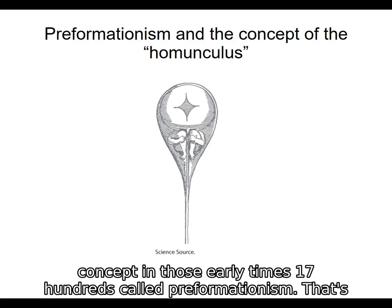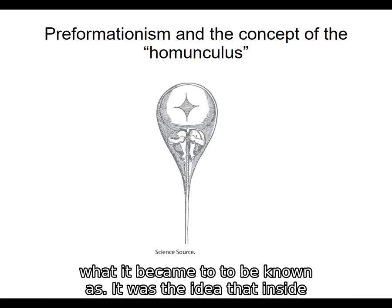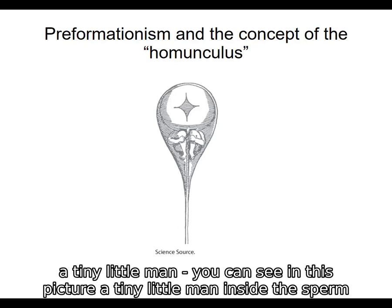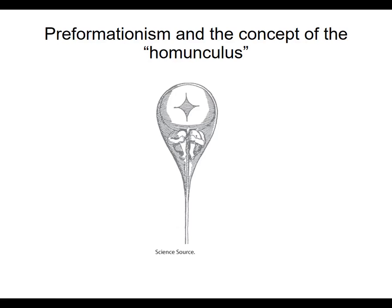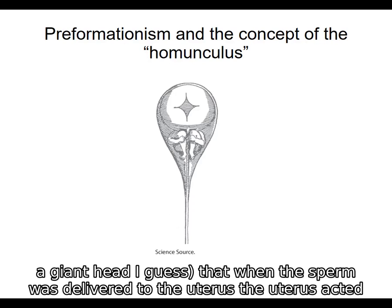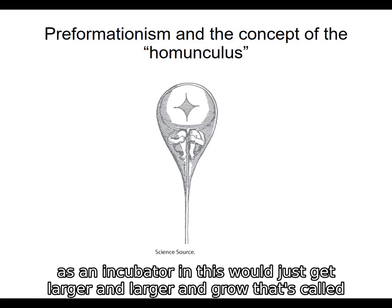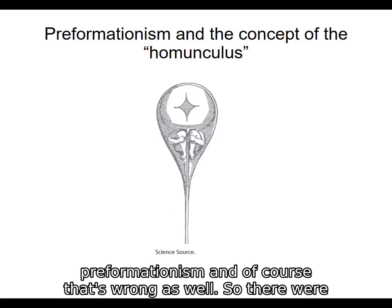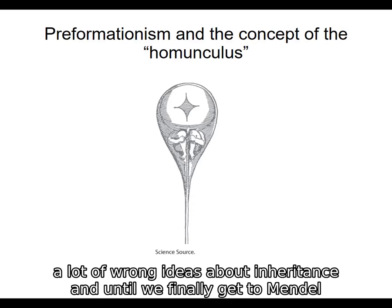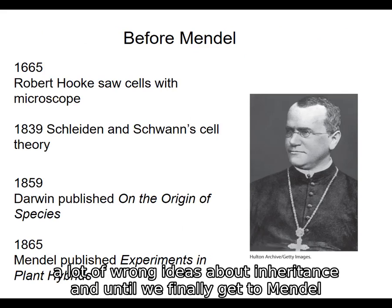There was also a wrong concept in those early times called preformationism. It was the idea that inside a sperm there would be a tiny little man — you can see in this picture a tiny little man inside the sperm with a giant head — and that when the sperm was delivered to the uterus, the uterus acted as an incubator and this would just get larger and larger and grow. That's called preformationism, and of course that's wrong as well. So there were a lot of wrong ideas about inheritance until we finally get to Mendel.